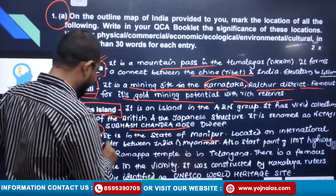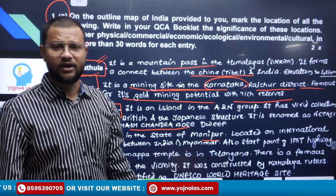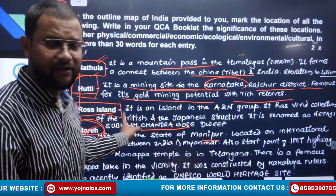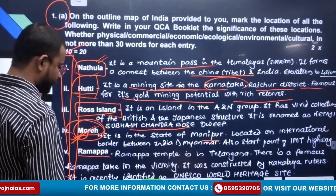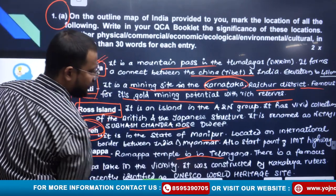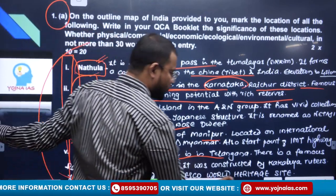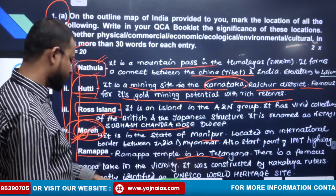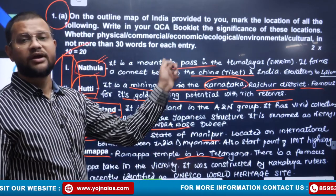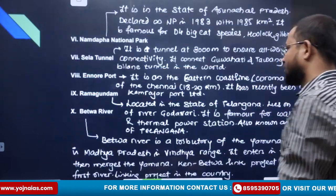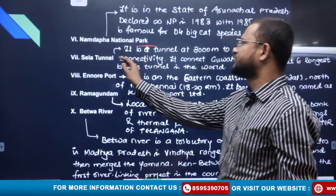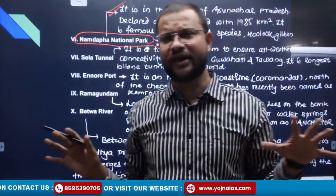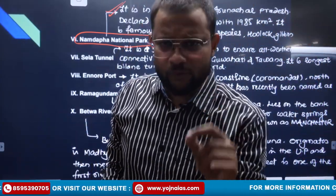Mora is the beginning point of the India-Myanmar-Thailand Trilateral Highway. Then Ramakpa, which is basically in Telangana — it is a UNESCO World Heritage Site where the famous Ramappa lake and temple is located, recently identified as the latest UNESCO site. Namdafa, that is in Arunachal Pradesh. I believe these are not very difficult locations and you are not supposed to write very detailed information — even a superficial understanding of 30 words is sufficient.